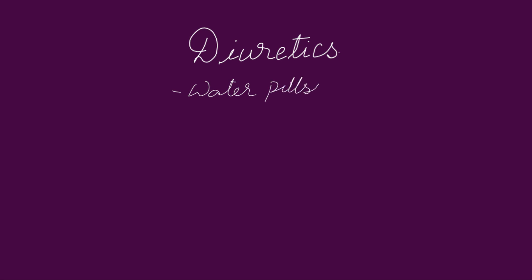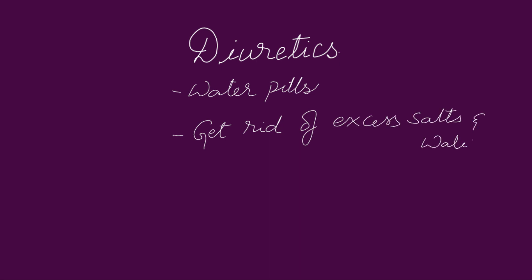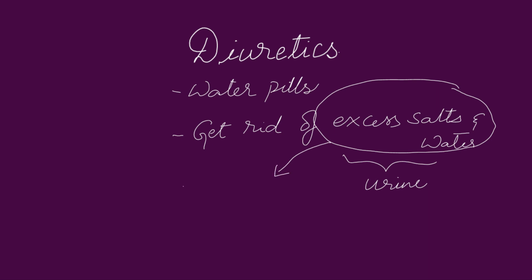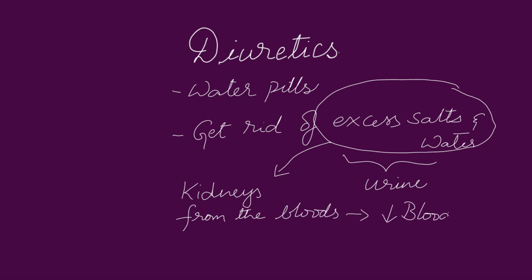So diuretics — these are commonly known as water pills. They help our body get rid of unneeded water and salt through the urine. Getting rid of excess salt and water occurs at kidney level. This excess salt and water is taken out from our body, therefore the blood becomes thin. In other words, the volume of the blood decreases, which causes lowering in blood pressure, which is very much necessary in hypertension.